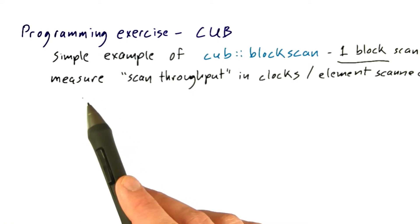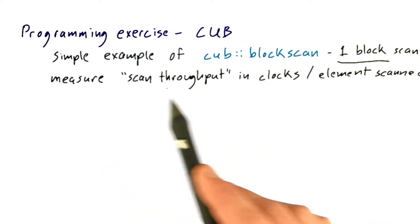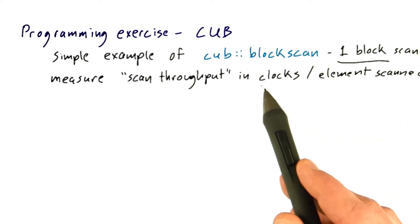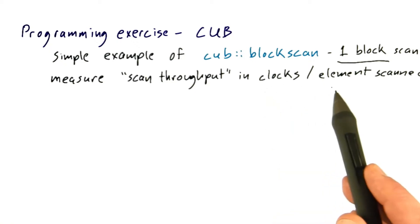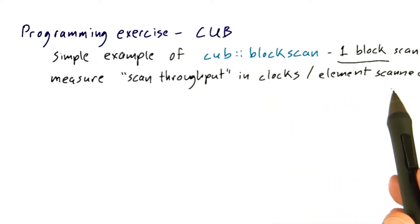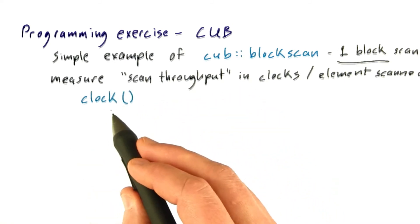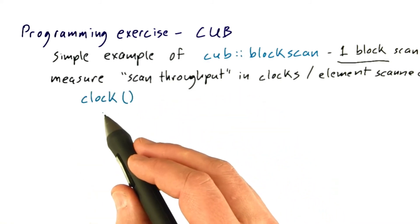We're going to measure something we haven't seen before: the scan throughput in clocks per element scanned. These are SM clocks—how many actual clock cycles the SM took, averaged across the total number of elements scanned by this single thread block. You'll see the CUDA built-in clock function in this kernel and the way it's used is obvious.